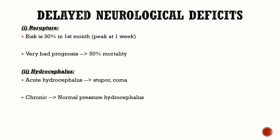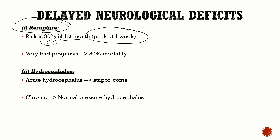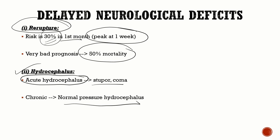Delayed neurological deficits in SAH: number one is re-rupture. Without treating the aneurysm, the risk of re-rupture is around 30% in the first month, peaking within seven days — very bad prognosis with mortality more than 50%. This is why it is critical to identify and treat berry aneurysms in all SAH cases. Number two is hydrocephalus: acute hydrocephalus presents as stupor or coma; in the long run, normal pressure hydrocephalus presents with dementia, gait abnormalities, and urinary incontinence.